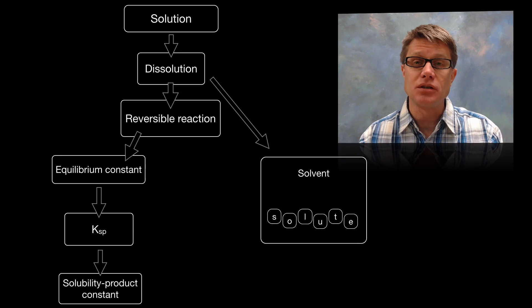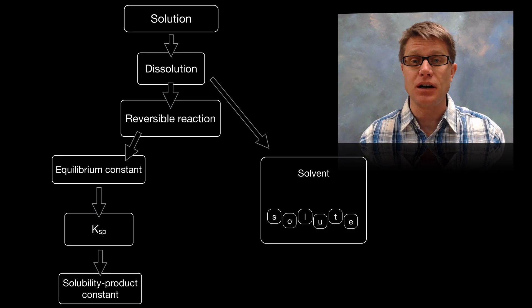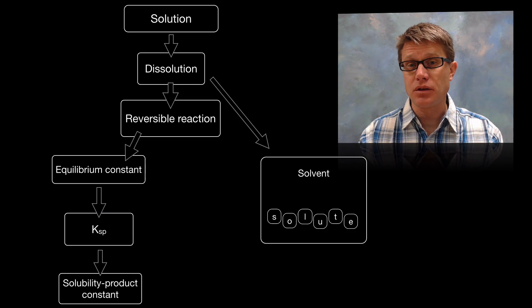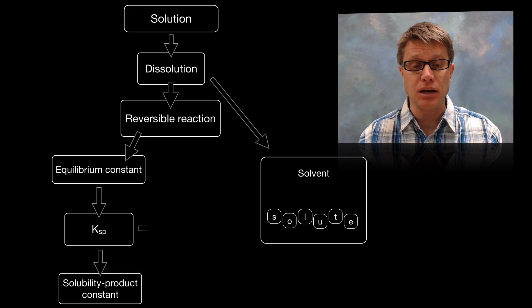And we'll call that Ksp, which is essentially the solubility product constant. And that's a way to measure the solubility of any kind of a salt.